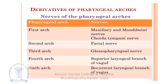The first arch is also known as the mandibular arch; its nerves are the maxillary, mandibular, and chorda tympani nerves. The second arch, also known as the hyoid arch, is derived from the facial nerve. The third arch is supplied by the glossopharyngeal nerve. The fourth arch is supplied by the superior laryngeal branch of the vagus, and the sixth arch by the recurrent laryngeal branch of the vagus.